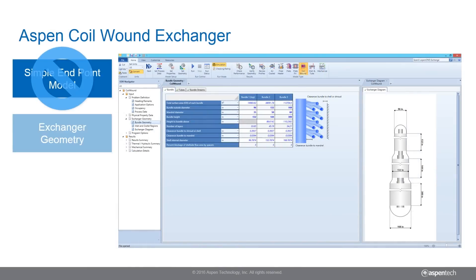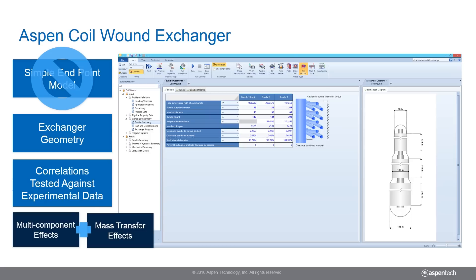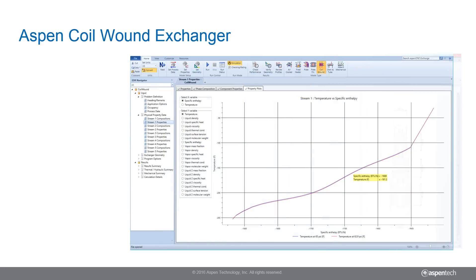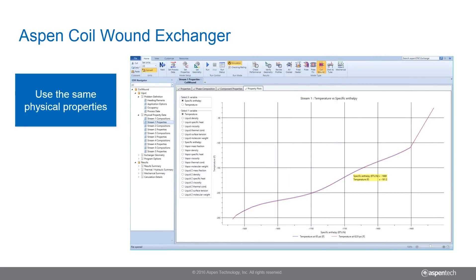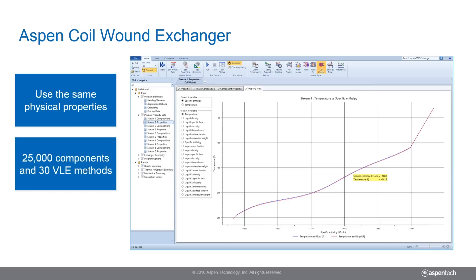Aspen Coil-Wound Exchanger uses exchanger geometry and rigorously tested correlations for calculation of heat transfer coefficients and pressure drops. By considering the multi-component and mass transfer effects, detailed temperature profiles and pressure drops can be calculated. Use consistent physical properties by importing property data from Aspen HYSYS or using Aspen Properties during the entire simulation and analysis. Aspen Properties offers 25,000 components and 30 vapor-liquid equilibrium methods.